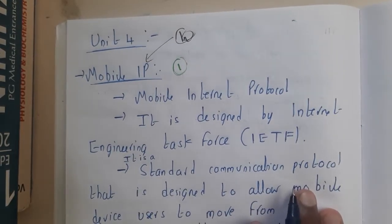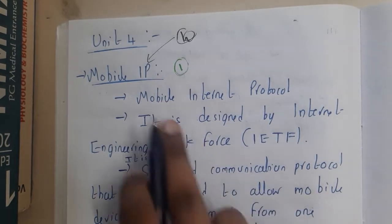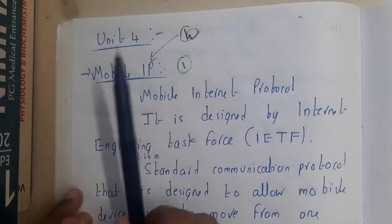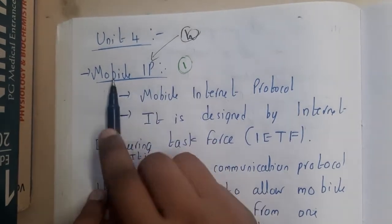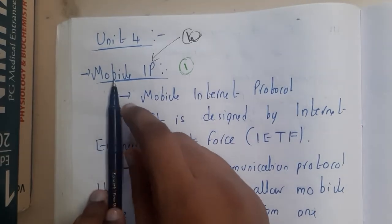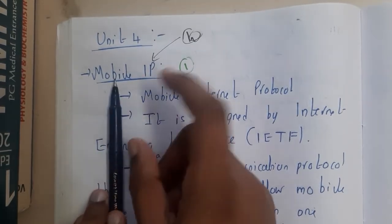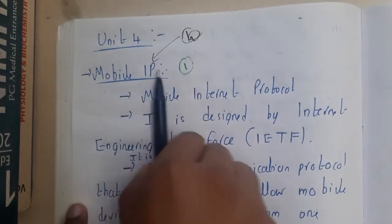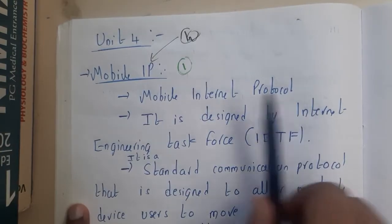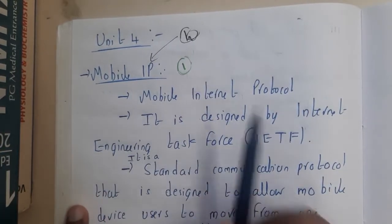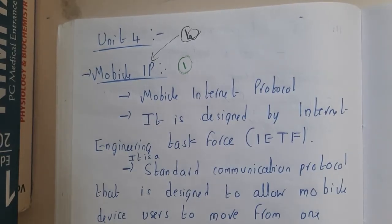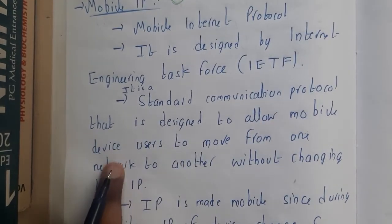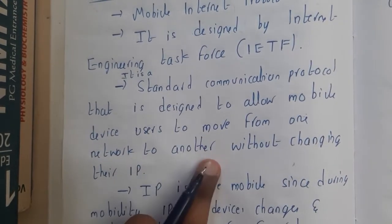What you said is somewhat correct. Basically, whenever your device is connected to the internet, it gets an IP address. Mobile devices can move from one place to another, so Mobile IP means the IP address can also move. It is a standard communication protocol designed to allow mobile device users to move from one network to another network without changing their IP.